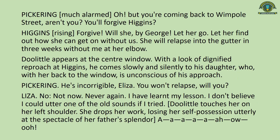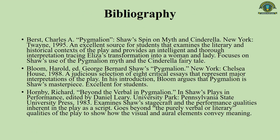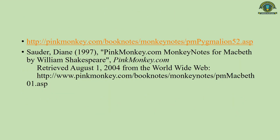Eliza says: 'There were a hundred little things you never noticed because they came naturally to you — things about standing up, taking off your hat, opening doors — things that showed you thought and felt about me as if I were something better than a scullery maid. The difference between a lady and a flower girl is not how she behaves but how she is treated. I shall always be a flower girl to Professor Higgins because he always treats me as a flower girl — but I know I can be a lady to you because you always treat me as a lady.' We pause here and continue Act 5 in the next lecture.